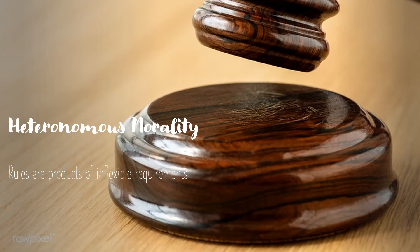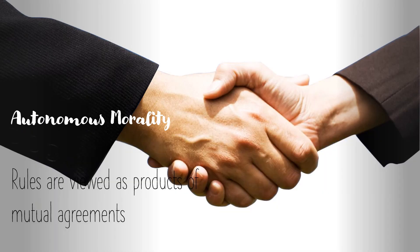Finally, we look at moral development. There are two stages: heteronomous morality and autonomous morality. Heteronomous morality is seen in younger children, especially between six to ten years. They see justice and rules as unchangeable properties of the world, removed from the control of people — rules are inflexible requirements. In autonomous morality, seen in children ten years and older, they become aware that rules and laws are created by people and are viewed as products of mutual agreement.